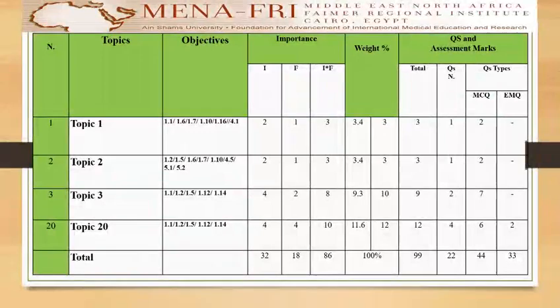Here we have a full blueprint where you can see the importance, the weight, and the assessment questions and assessment marks. Each topic has its own importance, its own weight, and the type of question to be assessed along with the number of questions in each assessment. This is what we call an effective blueprint.